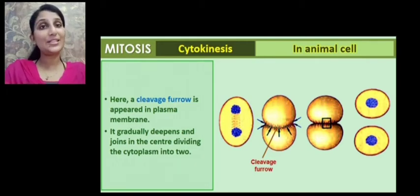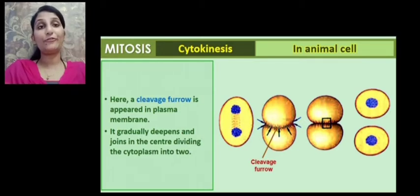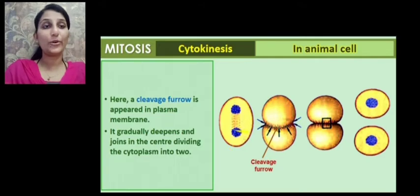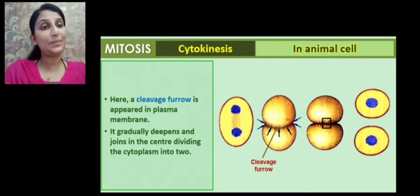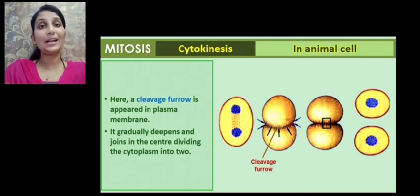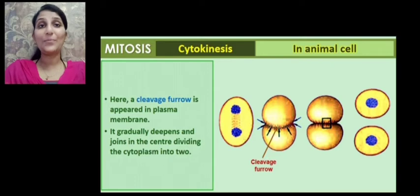In the case of animal cells, which do not have a cell wall, a cleavage furrow appears in the plasma membrane. We can see the plasma membrane with two daughter nuclei formed after telophase. A small furrow appears in the plasma membrane and it gradually deepens towards the middle, until the two furrows meet each other, and thus the cytoplasm is divided into two daughter cells, each with the same number of chromosomes as that of the parent cell.